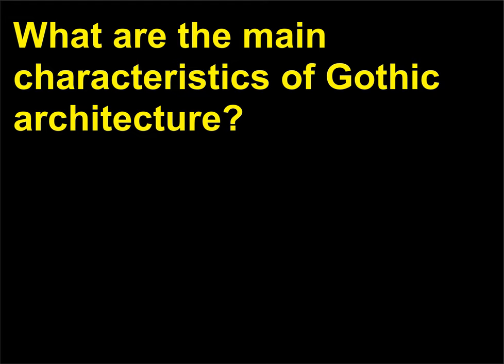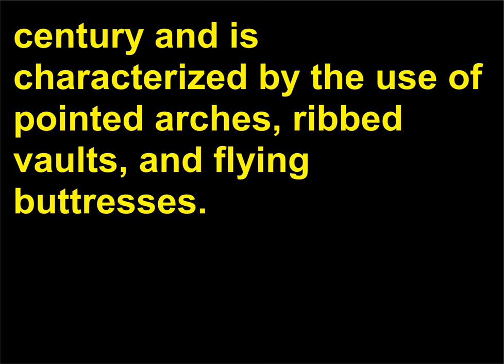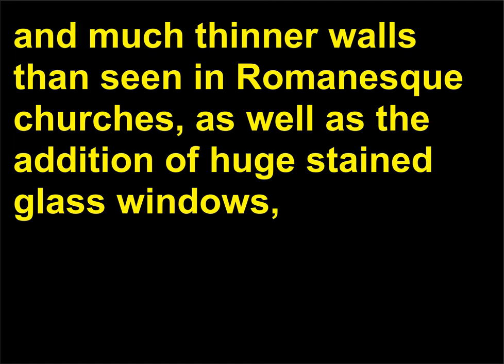What are the main characteristics of Gothic architecture? Gothic architecture developed as a major European style in France in the middle of the 12th century and is characterized by the use of pointed arches, ribbed vaults, and flying buttresses. These structural forms allowed medieval masons to achieve never-before-seen heights, and much thinner walls than seen in Romanesque churches, as well as the addition of huge stained glass windows, such as the rose window at Chartres Cathedral in France.